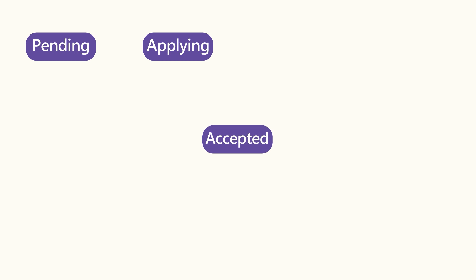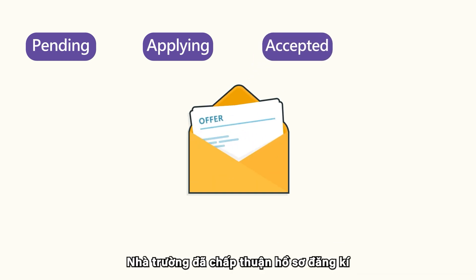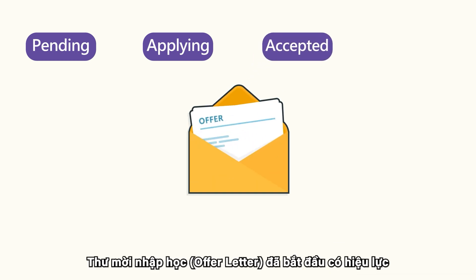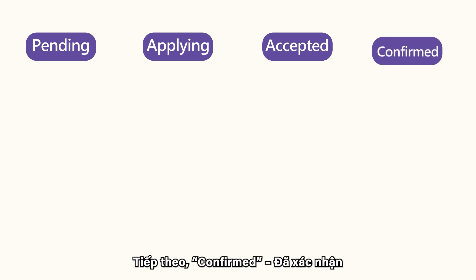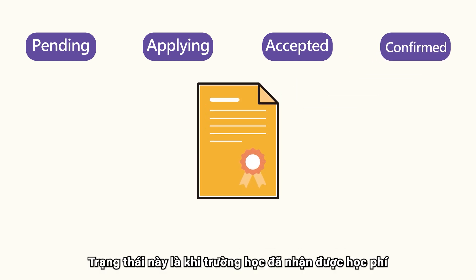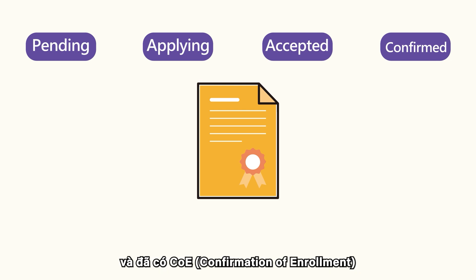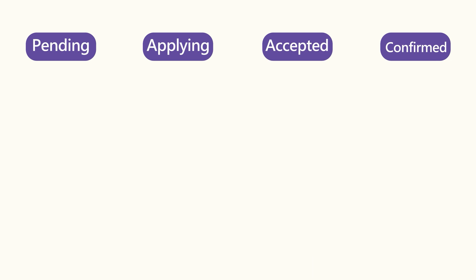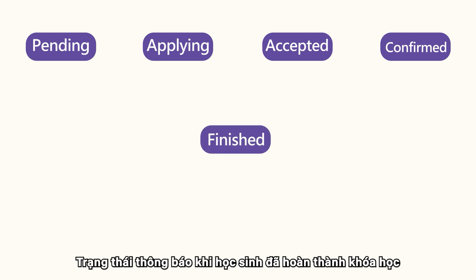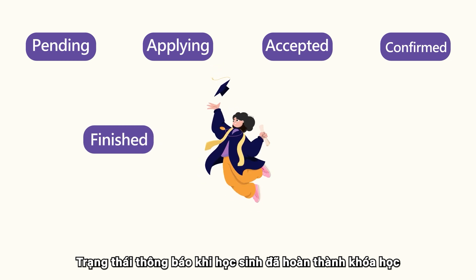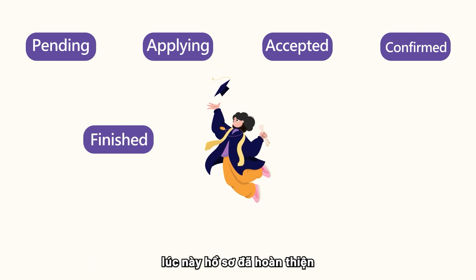Accepted means the College has accepted the application and the offer letter has been issued. Next, Confirmed, where the College has received the tuition fee and the COE has been issued. Finished tells us that the student has finished the course and the application is now closed.